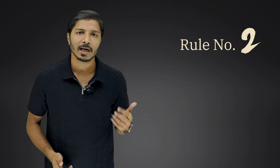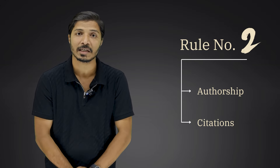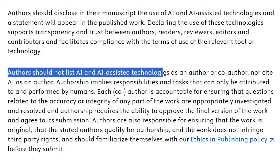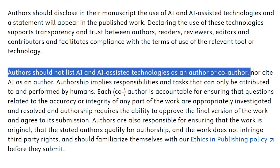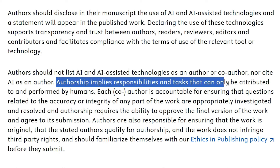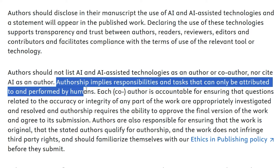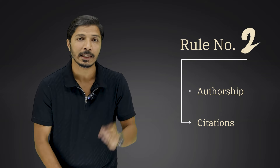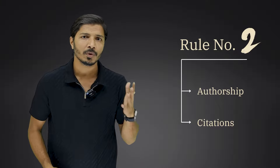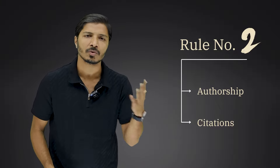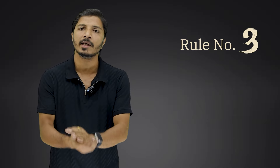Rule number 2 is regarding authorship and citation. It is clearly mentioned that authors should not list AI or AI-assisted technologies as an author or co-author, nor cite AI as an author. Authorship implies responsibilities and tasks that can only be attributed to and performed by humans. You cannot put any AI tool name in the list of authors, and citing these AI tools or related websites in the references is also not allowed.